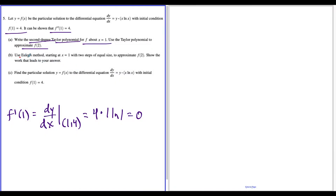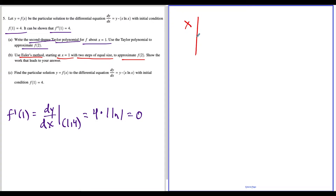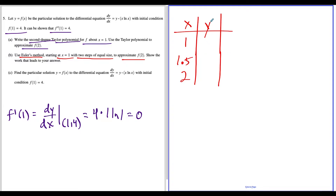For part B, we're using Euler's method, starting at x equals one, using two steps of equal size to also approximate f of two. What I like to do for these questions is make a table. We're going from one to two using two steps of equal size, so we're counting by a half — the middle value is 1.5. My starting point is y equals four when x equals one. I make a table with x, y, and the derivative. And dy/dx at (1, 4) was equal to zero.